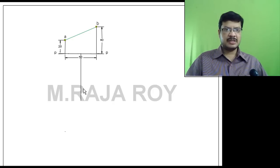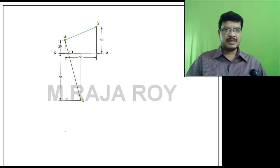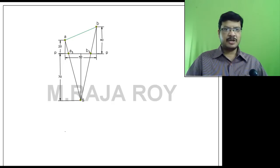Coming to the station point: the station point is centrally located with respect to the end projectors. That means at the midpoint of 50mm you have to place the station point, and the distance of the station point in front of the picture plane is 70mm. This point is the top view of the station point, that is S. Draw the line joining S to A — the intersection point of SA with PP gives point A1. Draw line joining SB — the intersection point of SB with the picture plane is B1. So A1 and B1 are representing the perspective projection of the line AB in the top view.